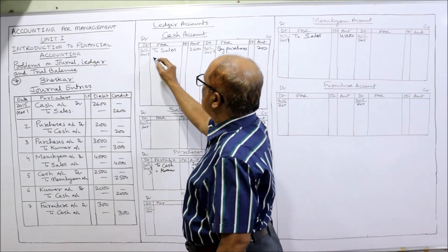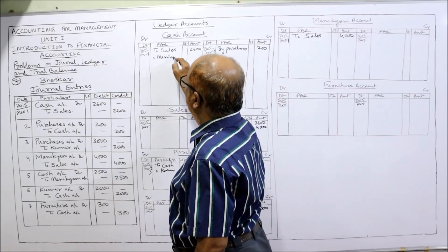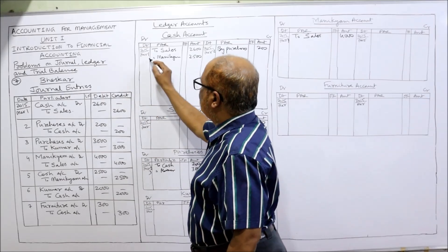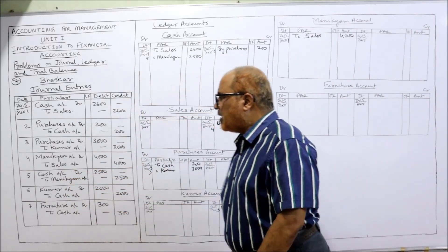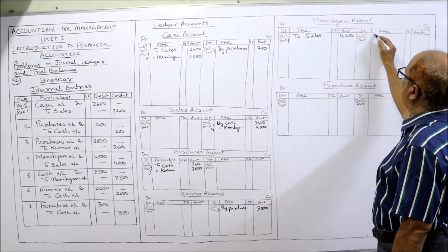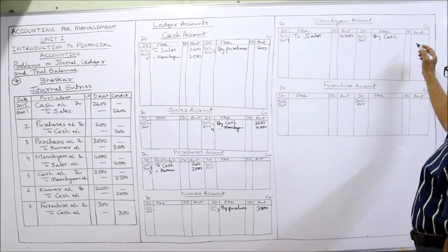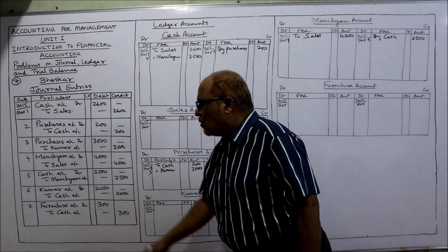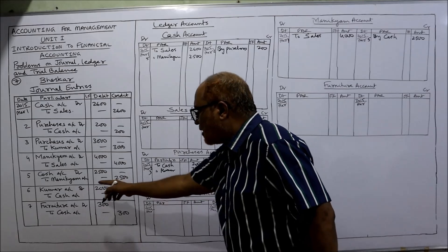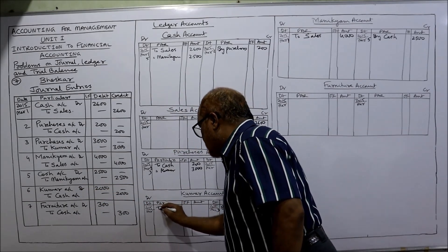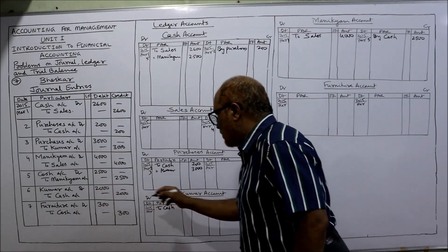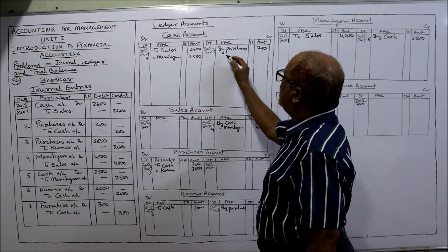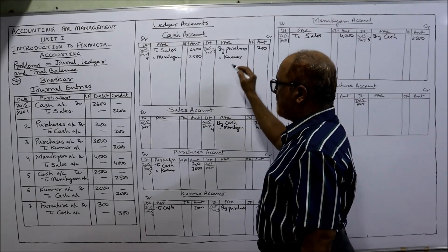Fifth transaction — Cash account Dr. to Moneycam. Cash account debit side: 'To Moneycam — 2500', date is 5th. Moneycam account should be credited — credit side: 'By Cash — 2500', date is 5th. Sixth transaction — Kumar account Dr. to Cash. Kumar account debit side: 'To Cash — 2000', date is 6th. Cash account credit side: 'By Kumar — 2000', date is 6th.